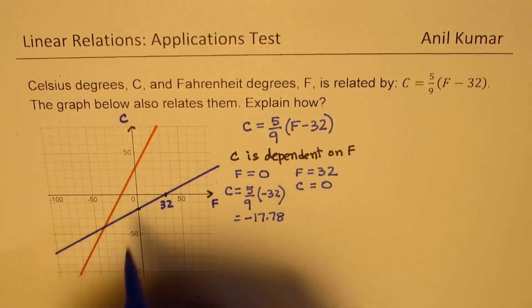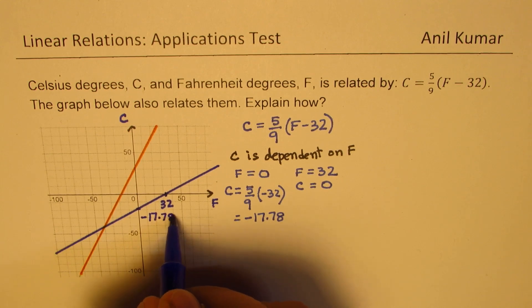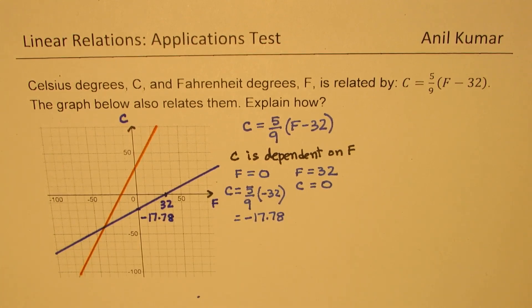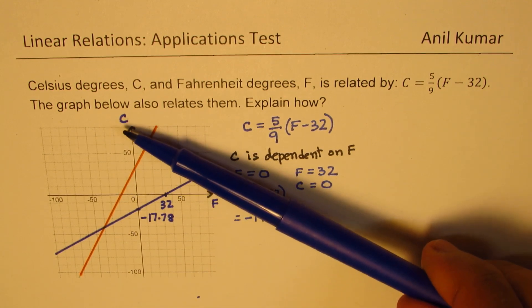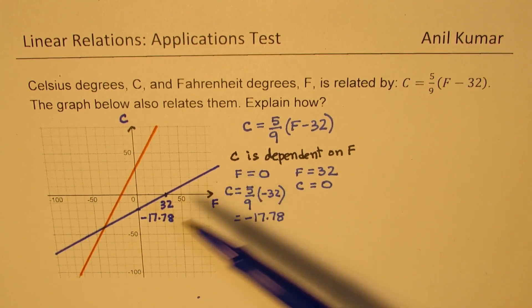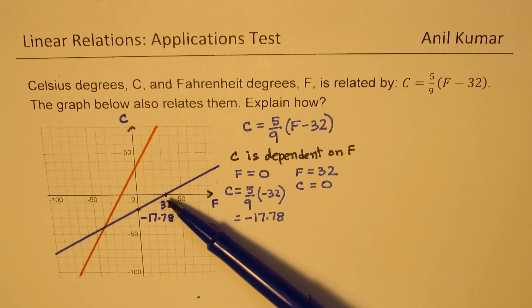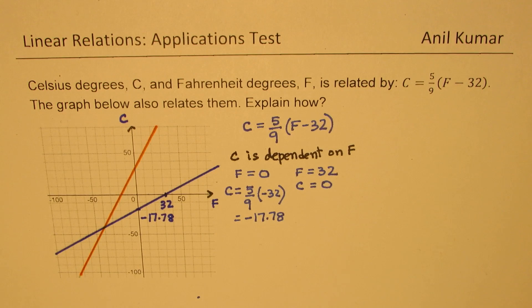The point here, which is the y-intercept, represents the value minus 17.78. Whenever you have a value on the y-axis, that is the value for C. So C is minus 17.78 degrees Celsius when F is 0 degrees Fahrenheit. And C is 0 degrees Celsius when F is 32 degrees Fahrenheit. That makes sense.